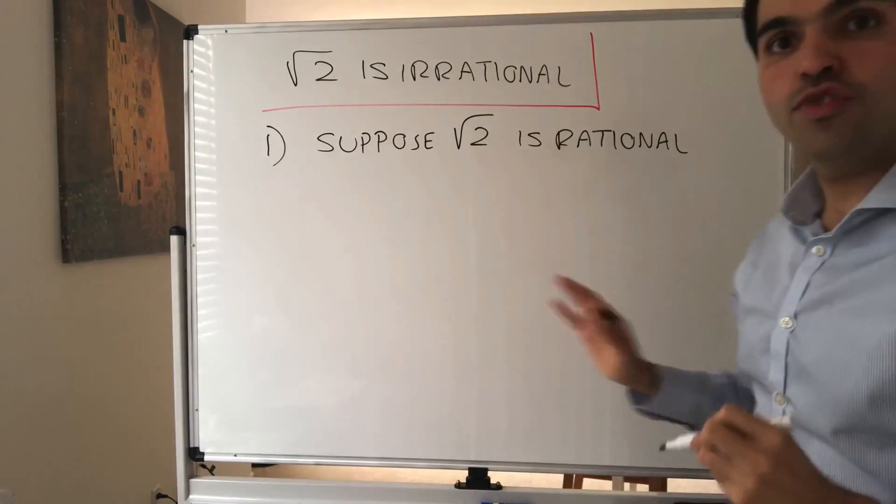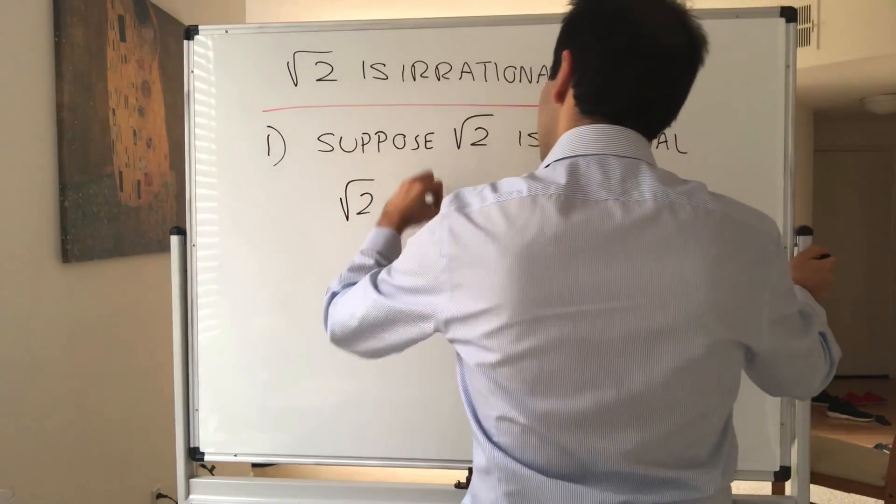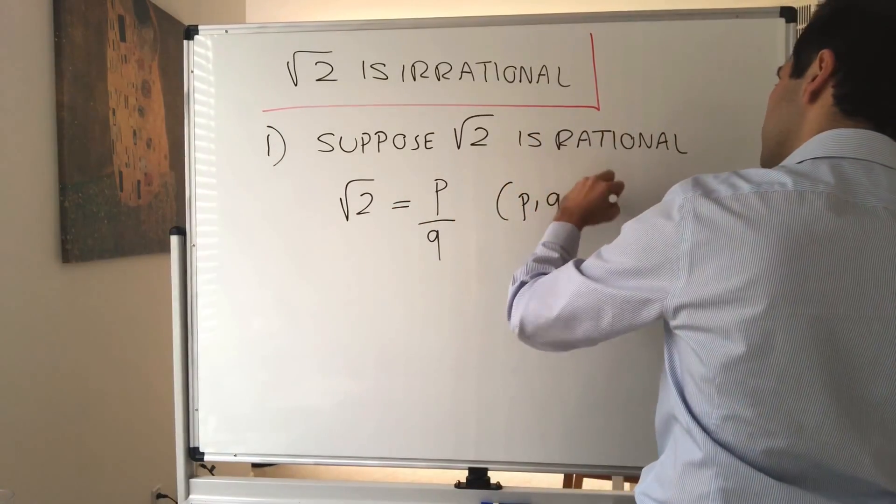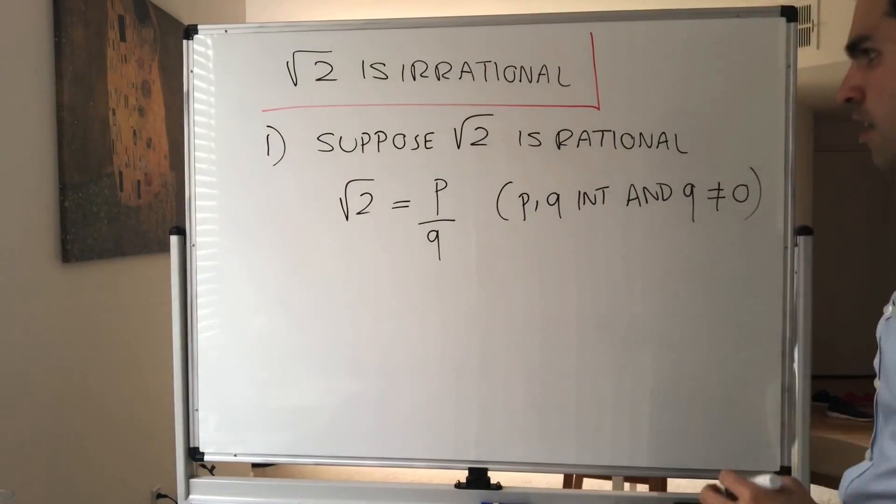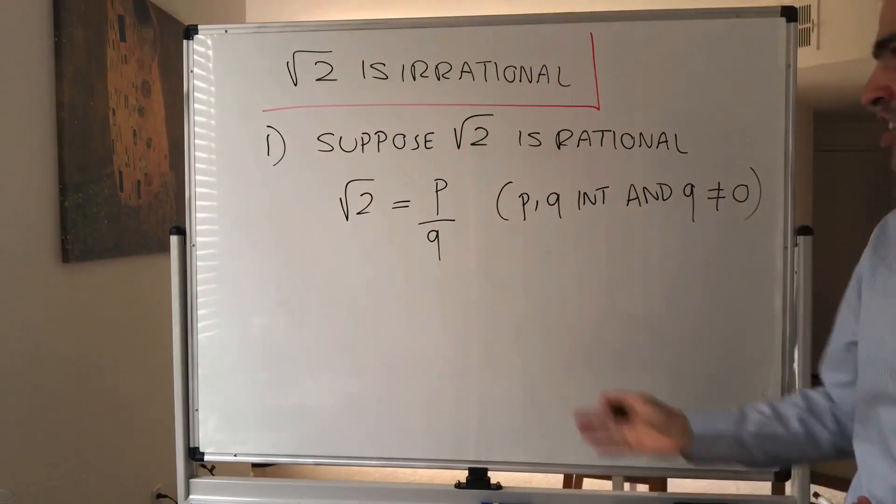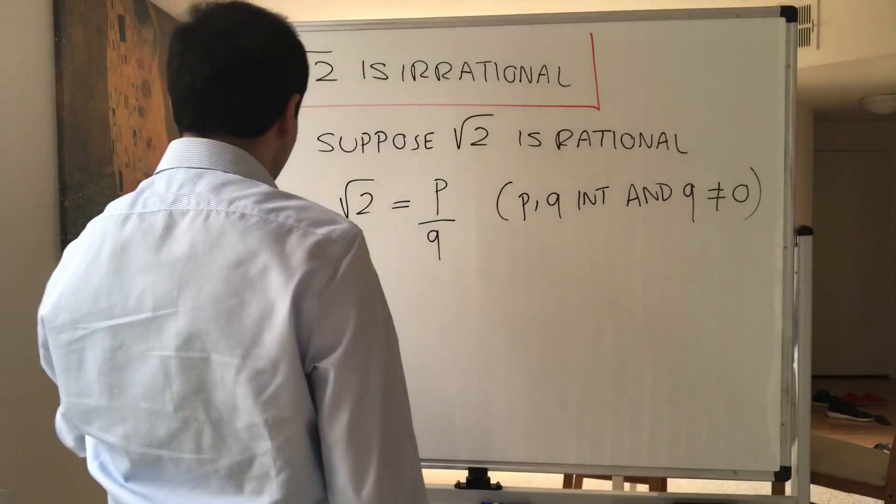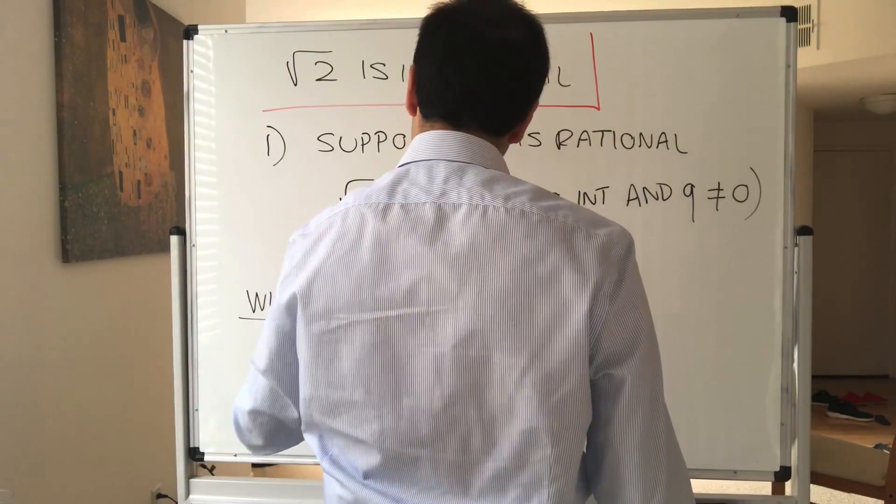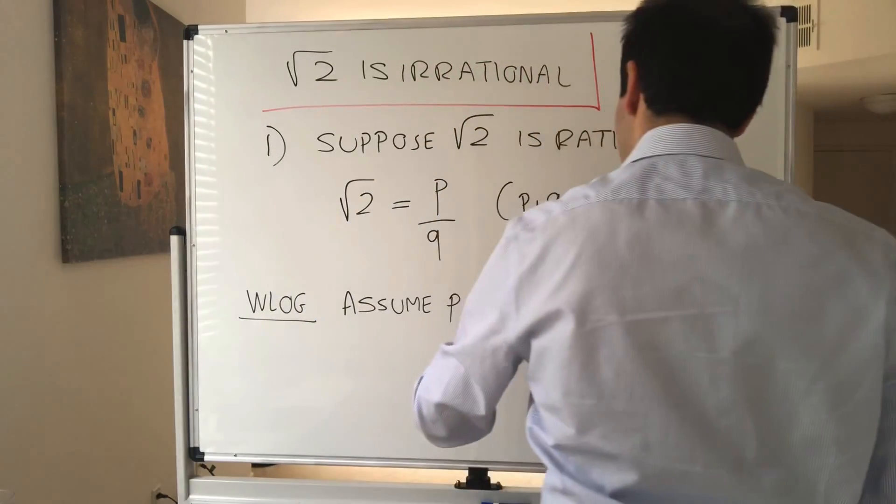What does that mean? Assume that square root of 2 is the ratio of two integers. So square root of 2 equals p over q, where p and q are integers and q is non-zero. And moreover, we will assume that this fraction is a reduced fraction, which means p and q have no factors in common. And this will be very important in a second. So without loss of generality, assume p and q have no factors in common.